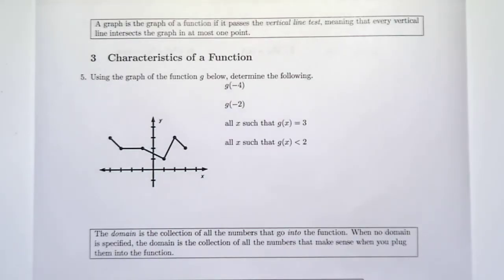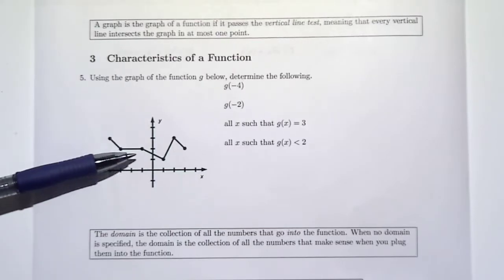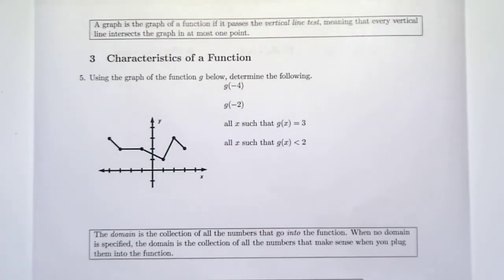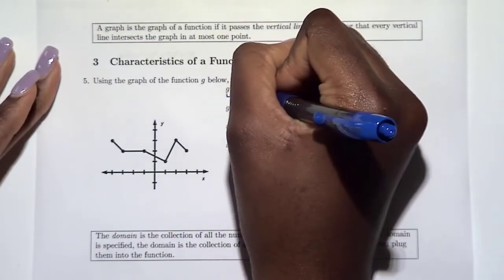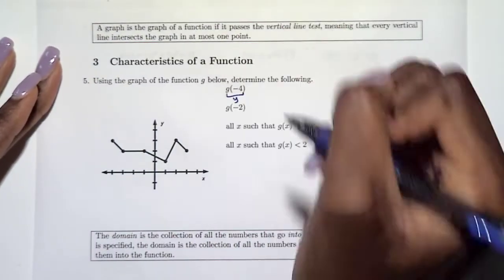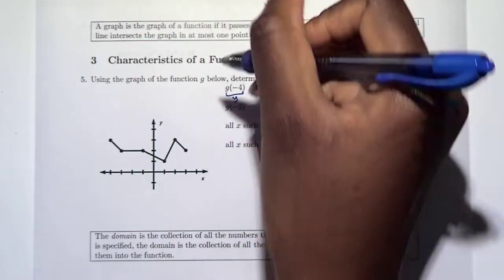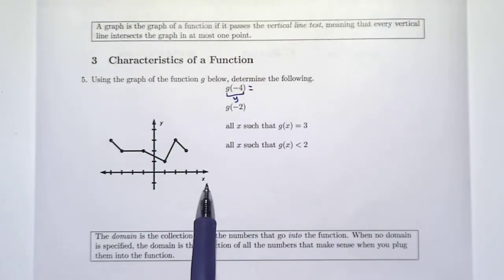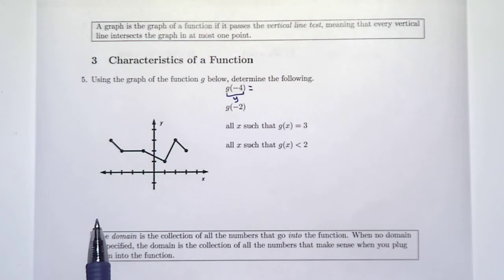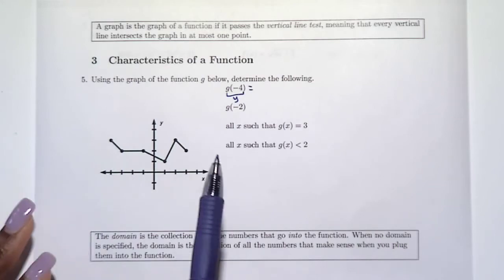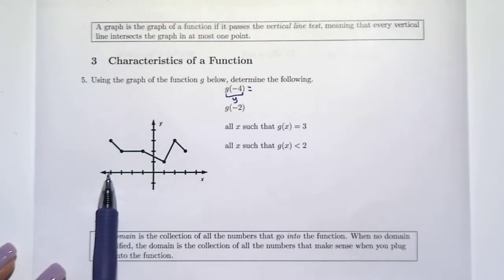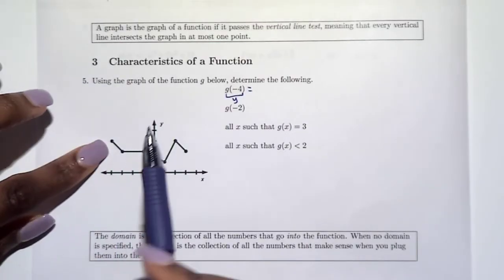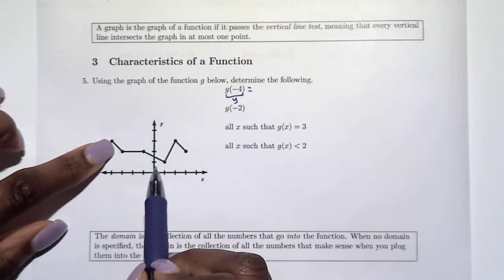Let's talk about some characteristics of a function. Here's a graph of our function g, and we want to determine some things. So we have g of negative four — remember, this is a y-value and negative four is the x-value we're plugging in. So we look for negative four on the x-axis, and our answer is going to be the y-value.